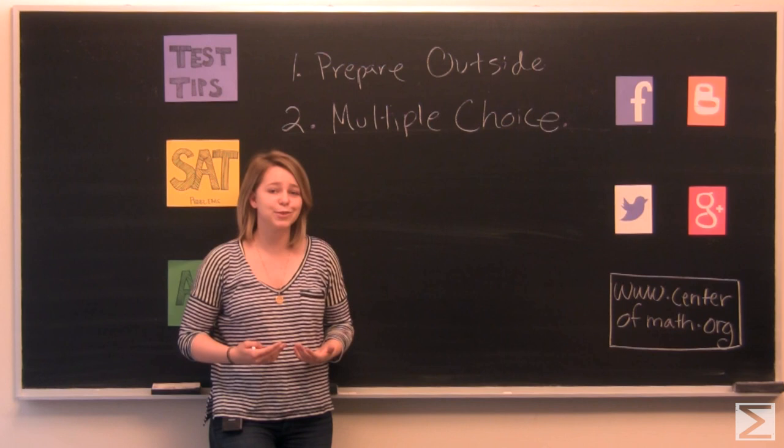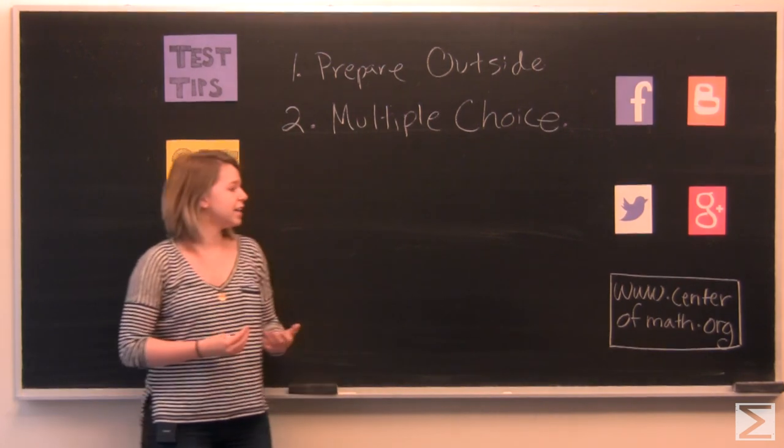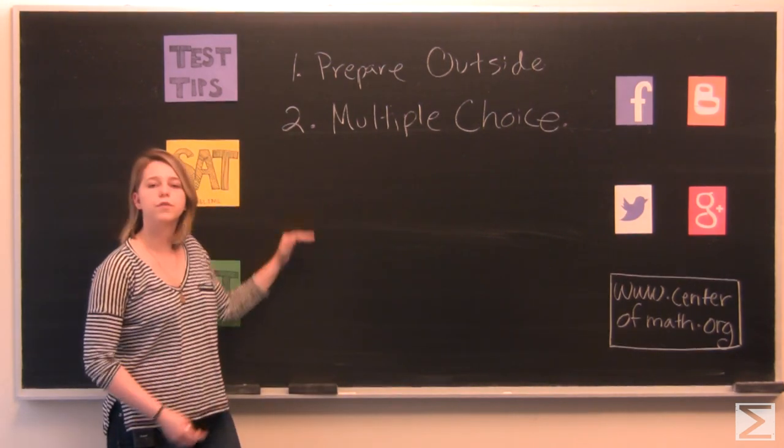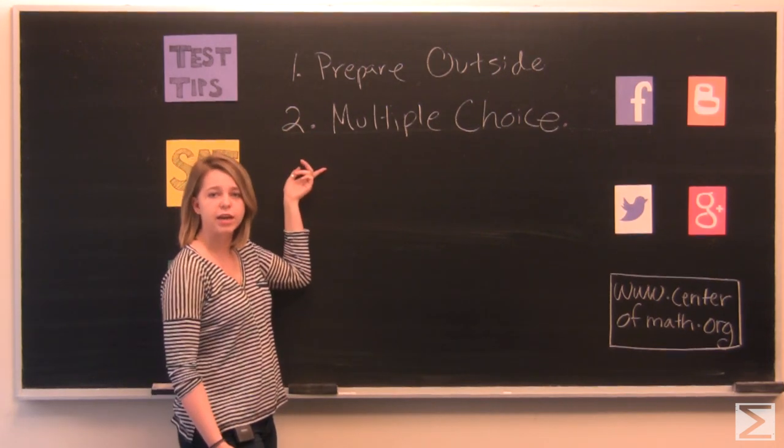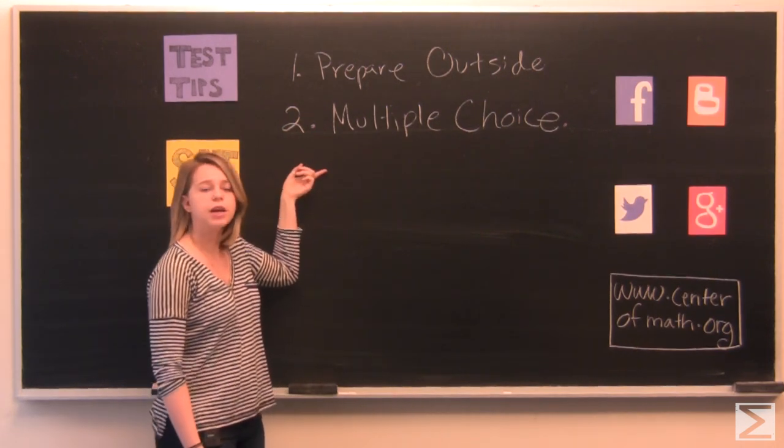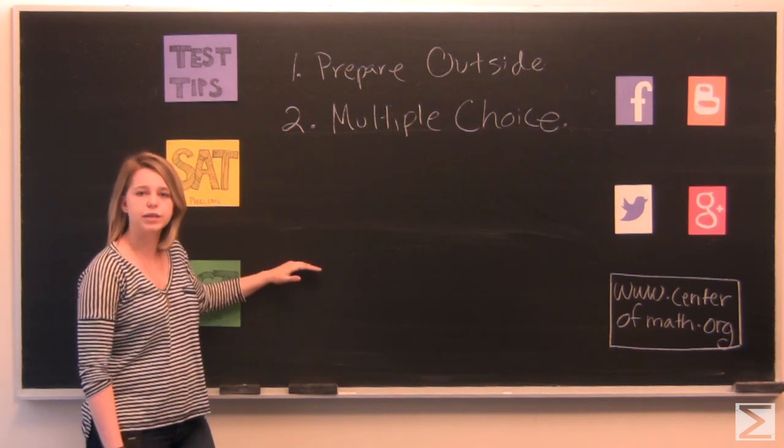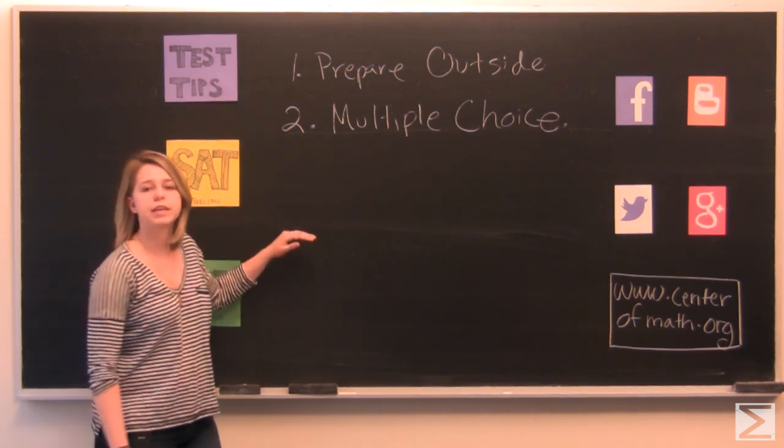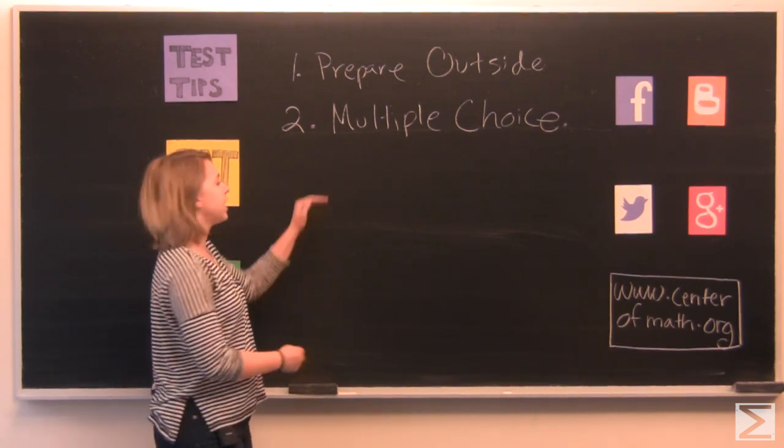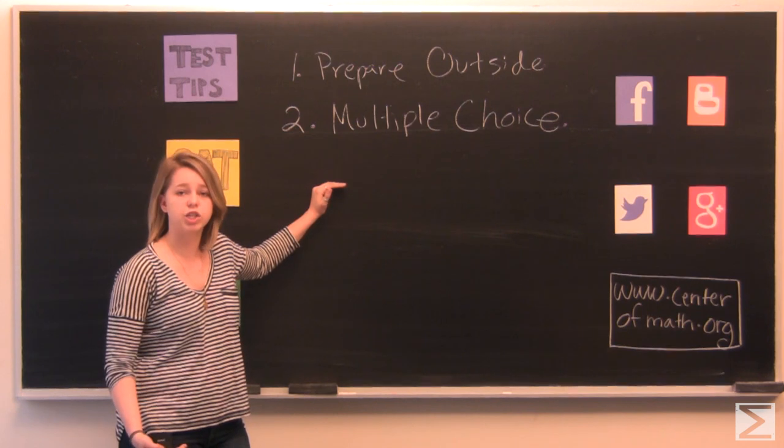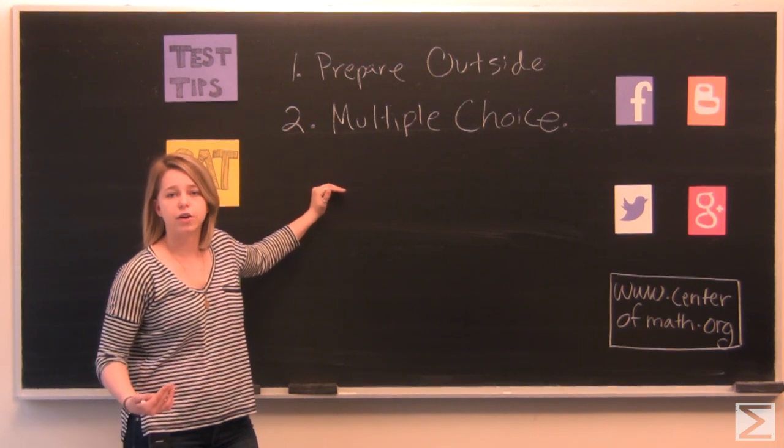Sometimes the fastest way to solve a question is to take one of your five answer choices, plug it into whatever equation that the question gives you, and move on to the next choice if that wasn't correct. So often you'll be using choice A, choice B, choice C, choice D, and choice E in an equation that the question gives you, just trying to find the correct answer.